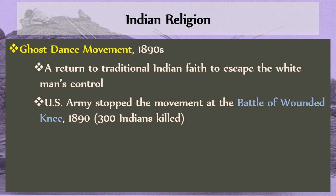The United States Army heard about this movement and interpreted it as some kind of secret conspiracy to attack the US — a prelude to a new series of Indian wars. So the army stopped the movement at the Battle of Wounded Knee, South Dakota, in 1890. About 300 native peoples — men, women, and children — were killed by the US Army. It became an event that native peoples would never forget, a symbol of the horrific violence done against native peoples by the US government.